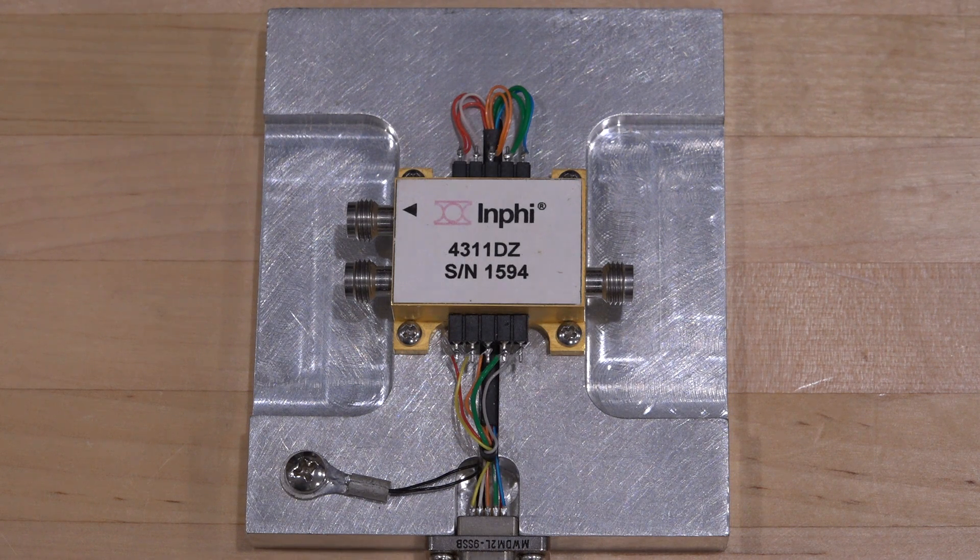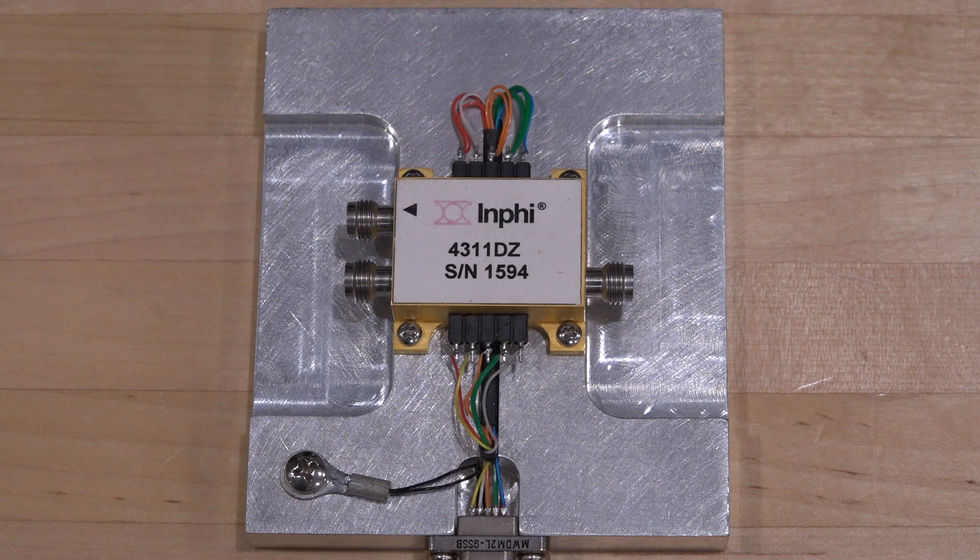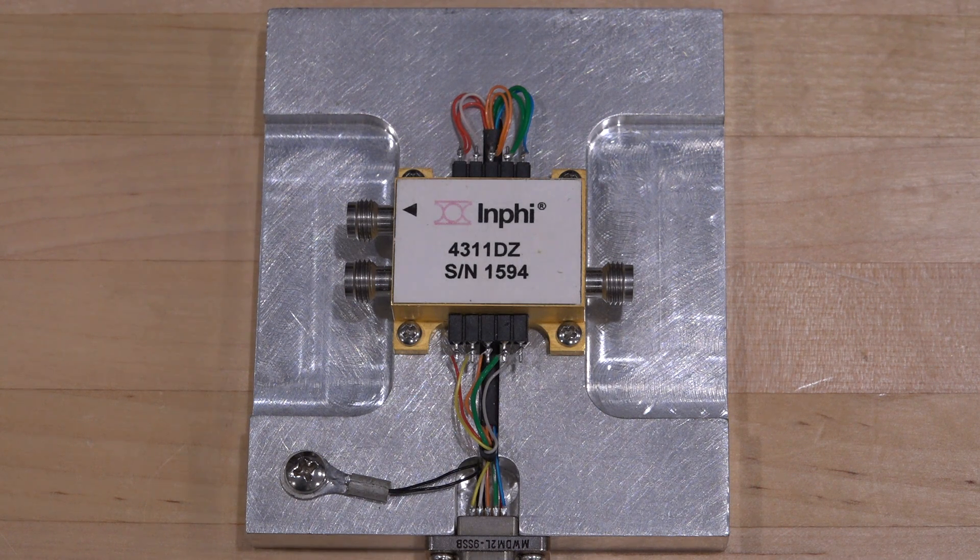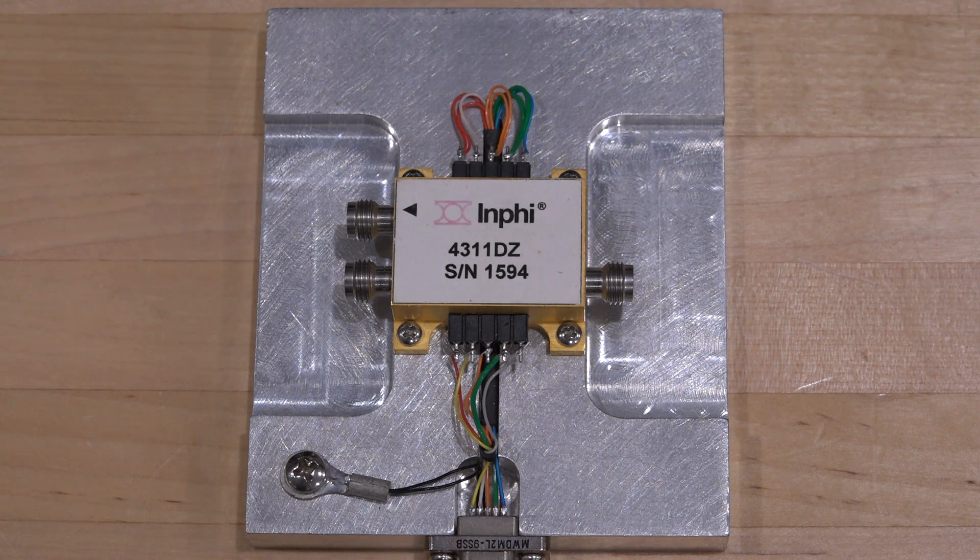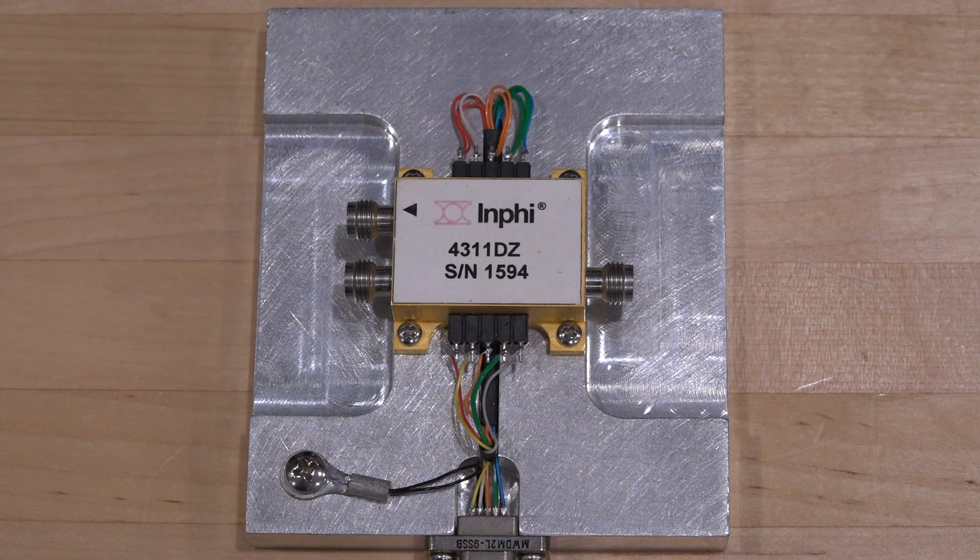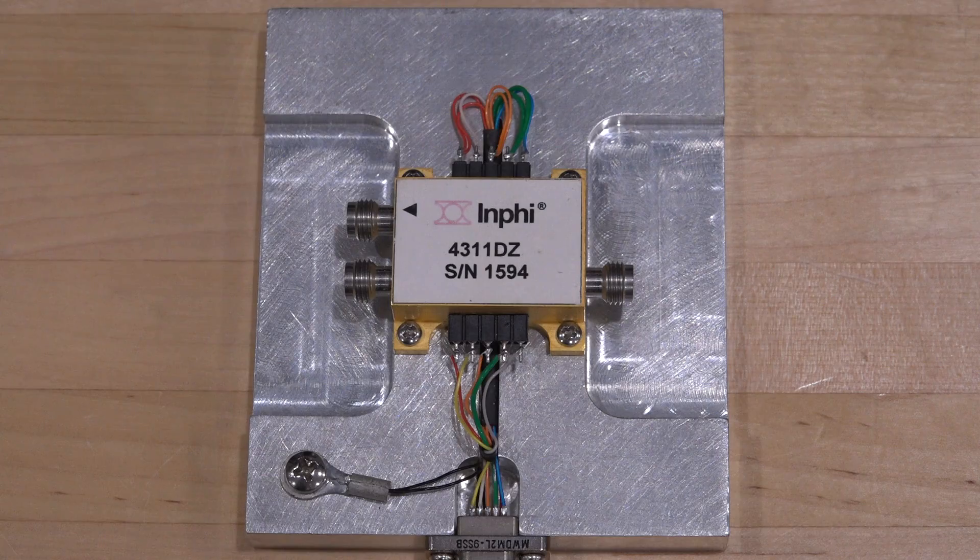Now this is pretty old, so by the standard of coherent optics this would be able to give you a 43 gigabit per second QPSK modulation which is essentially entirely obsolete. Now we're looking at far higher modulation rates and far higher data rates. But nonetheless this should be interesting to take a look inside.